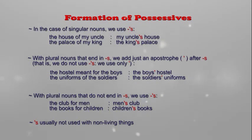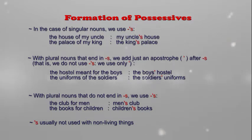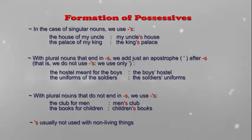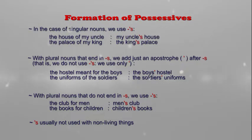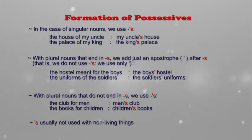With plural nouns that do not end in s, we use apostrophe s. If the sentence has a plural noun but the noun does not end with s, then we need to add apostrophe s. For example, 'the club for men' becomes 'men's club' in the possessive form.